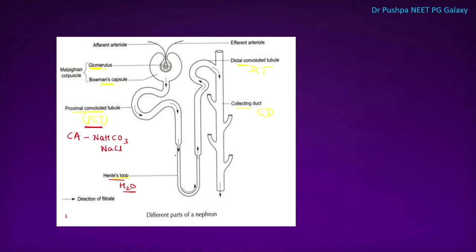This is the descending limb, whereas this is the ascending limb of the loop of Henle. In the ascending limb there is a sodium-potassium-2-chloride symporter, where most of the salts are reabsorbed, so this is called the diluting segment. The descending segment is the concentrating segment, whereas the ascending segment is the diluting segment of the loop of Henle.